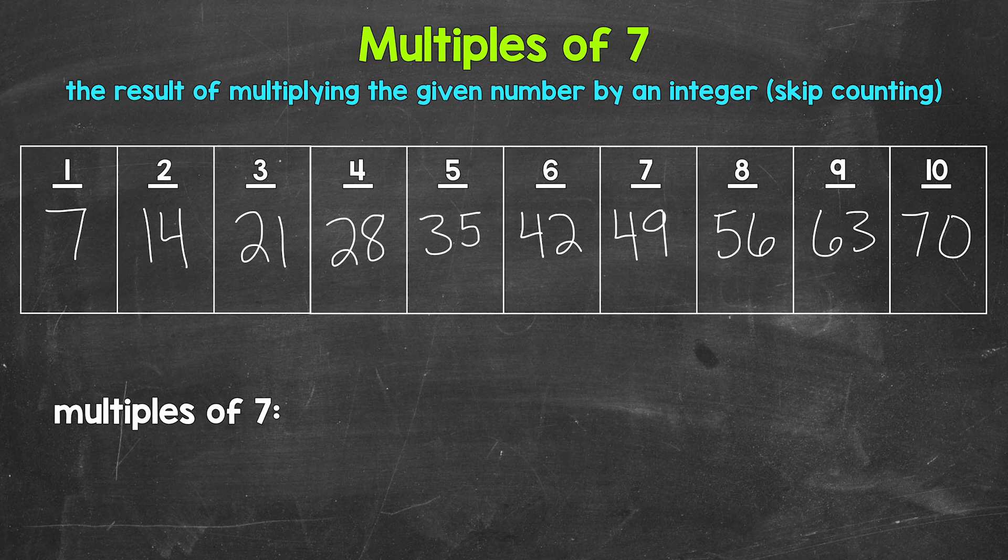Now let's write these multiples in a list below. And you'll notice we're just counting up by seven. Like I mentioned earlier, another way to think of multiples is to skip count.